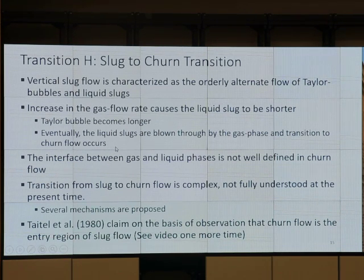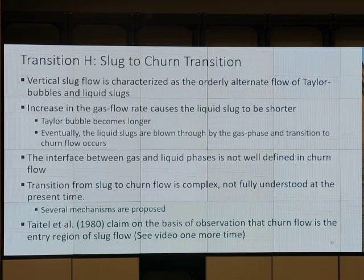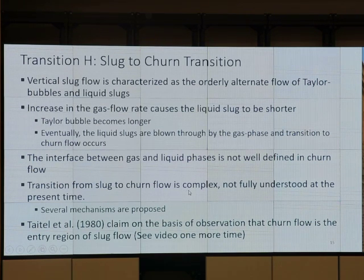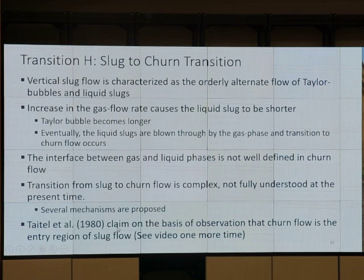The phenomenon is this: when you have slug flow, churn flow happens because the bottom bubble moves fast enough to break through or blow through the next chunk of liquid. That's where we get churn flow — it's chaotic, shaking up and down, as you've seen in the lab. Transition from slug to churn flow is complex and not fully understood, but we have models to do it.